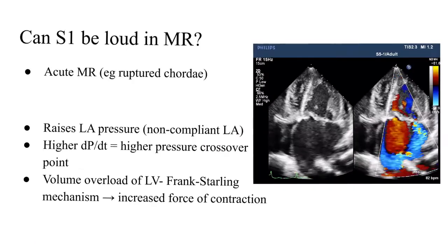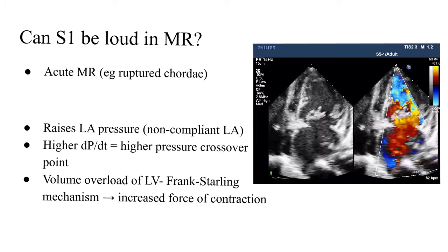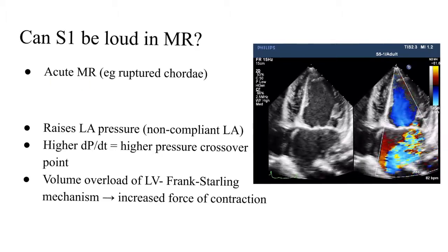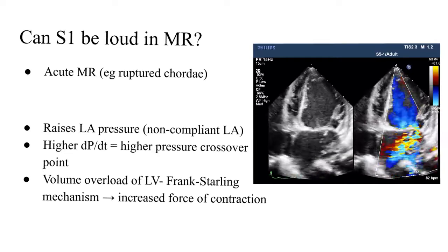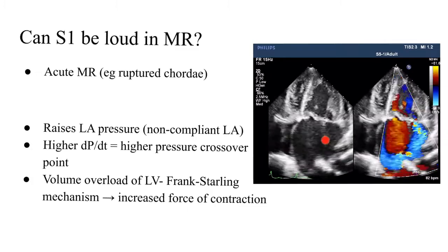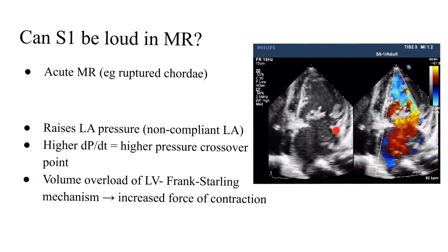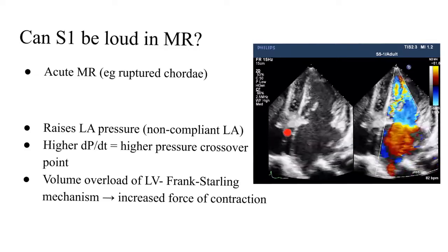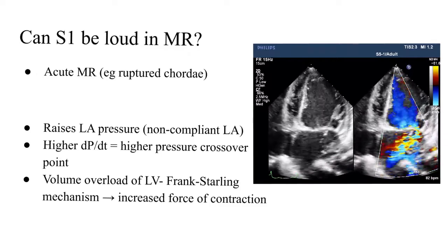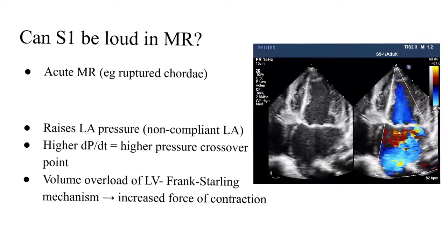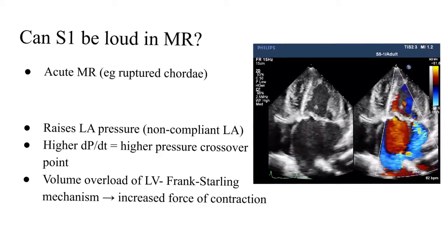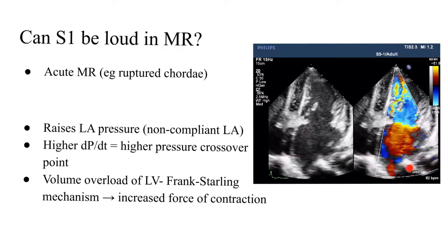Can S1 be loud in cases of mitral regurgitation, just like in mitral stenosis? Yes, in certain conditions of acute mitral regurgitation — especially in cases of a ruptured chordae or infective endocarditis. Looking at this echocardiography loop, this is an apical four-chamber view showing the LA, LV, RA, and RV. You can see a mobile structure on the anterior mitral leaflet and a heterogeneous mass over the posterior wall of the left atrium — a case of infective endocarditis causing an eccentrically directed severe mitral regurgitation jet directed toward the posterior wall of the LA.